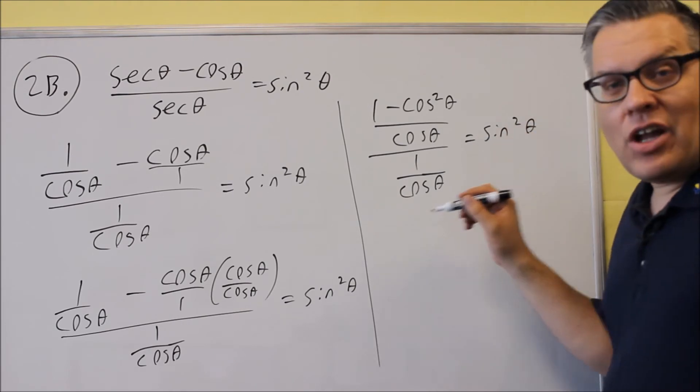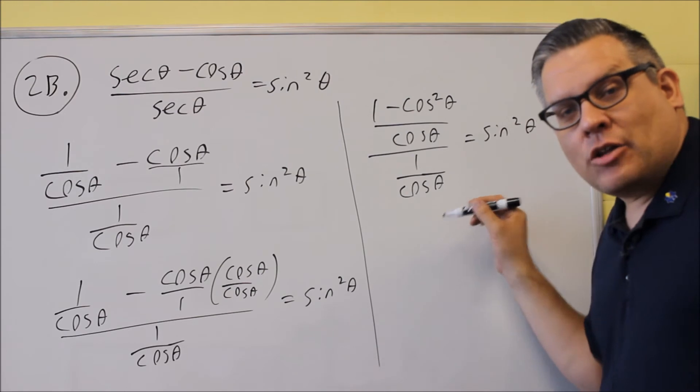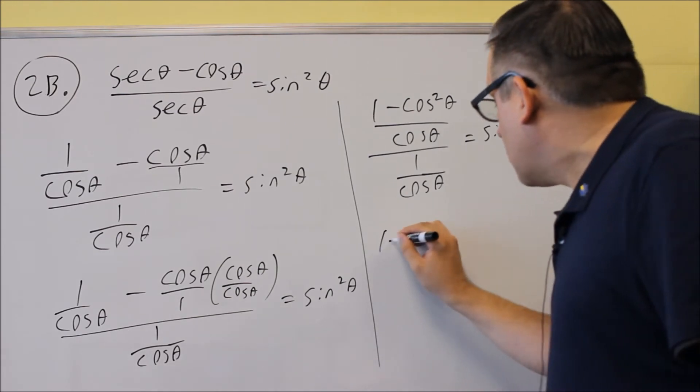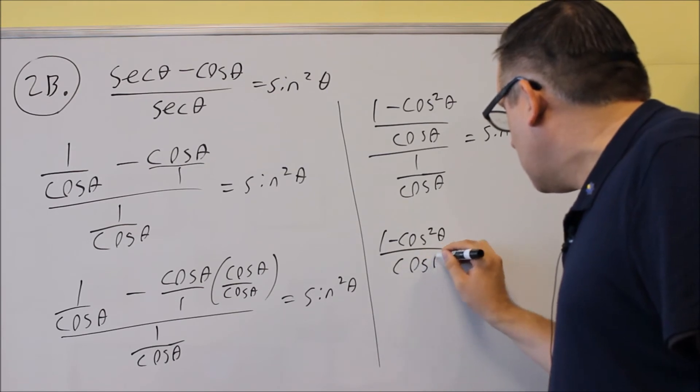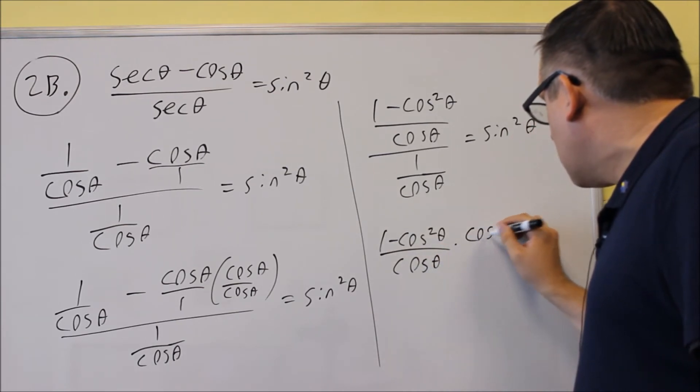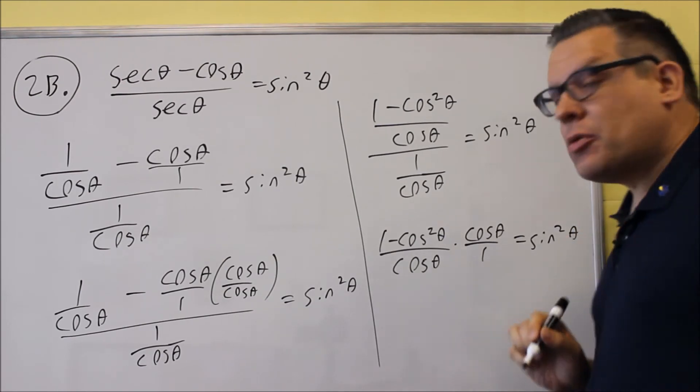And now that I have that, I have a fraction over a fraction. So I want to take the top fraction and multiply it by the reciprocal of the bottom one. So 1 minus cosine squared over cosine, I'm going to multiply this by cosine theta over 1. So I'm going to flip and multiply there.